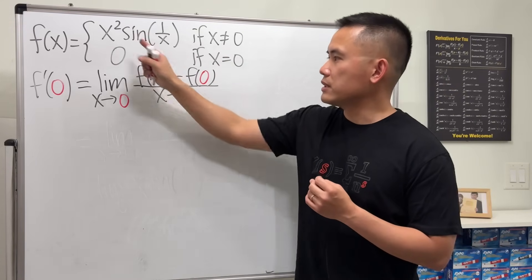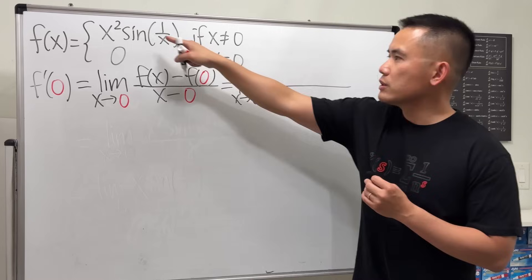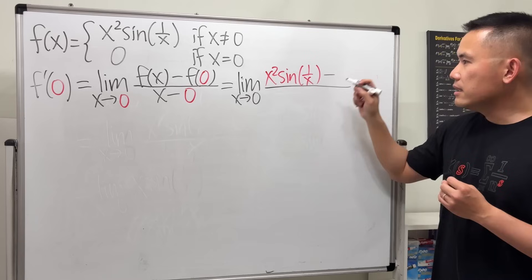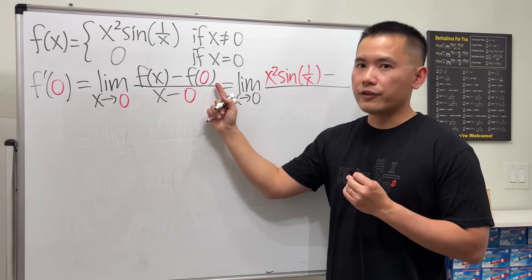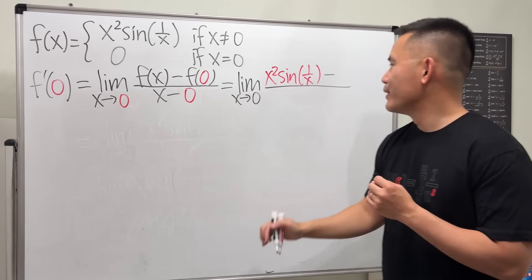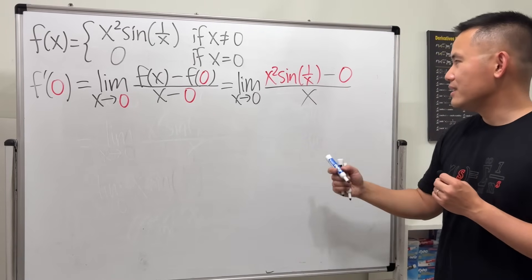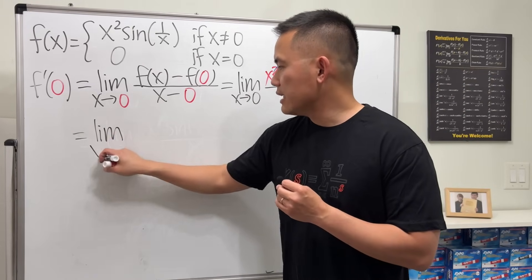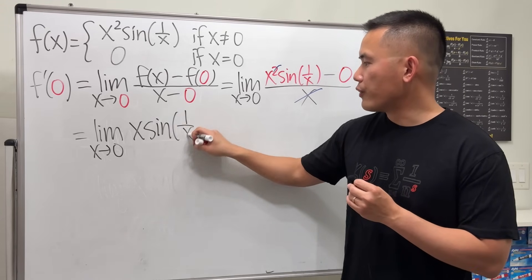Now when we have the limit as x approaching zero, we don't care about when x is exactly equal to zero, so we use the piece where x is not zero. This gives us the limit as x approaching zero of x squared times sine of one over x, minus f of zero — which is zero — all over x. We can cancel one of the x's to get the limit as x approaching zero of x times sine of one over x.